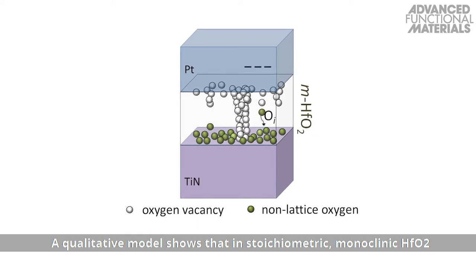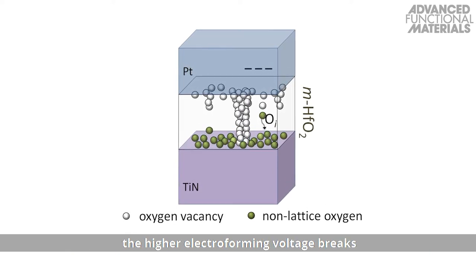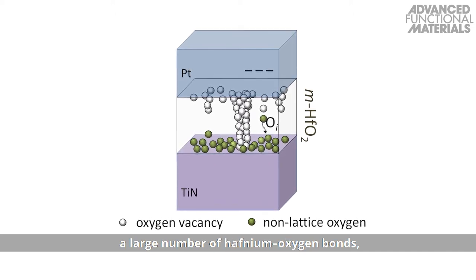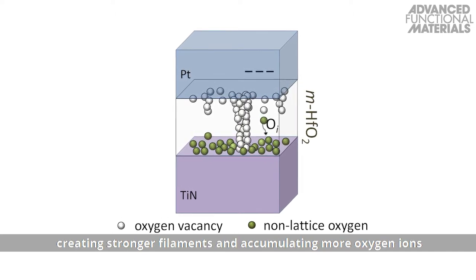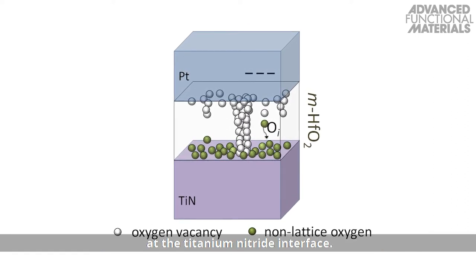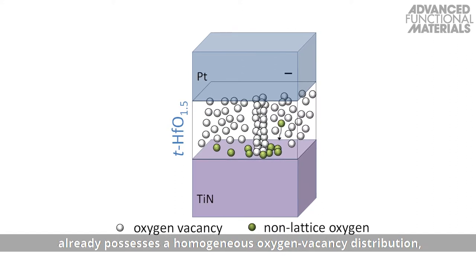A qualitative model shows that in stoichiometric monoclinic hafnium dioxide, the higher electroforming voltage breaks a large number of hafnium oxygen bonds, creating stronger filaments and accumulating more oxygen ions at the titanium nitride interface.